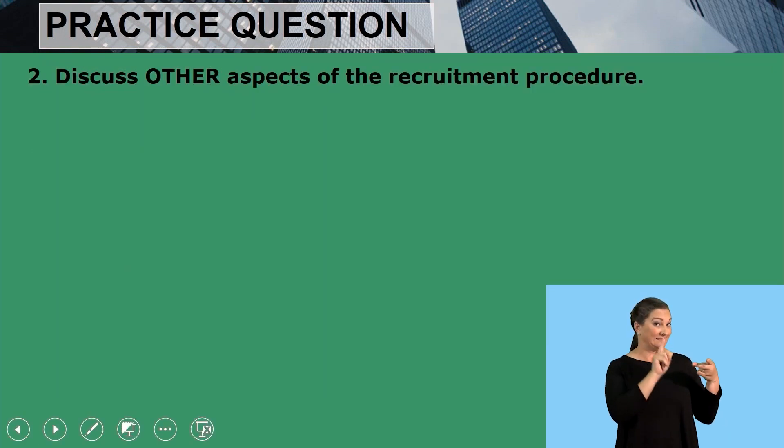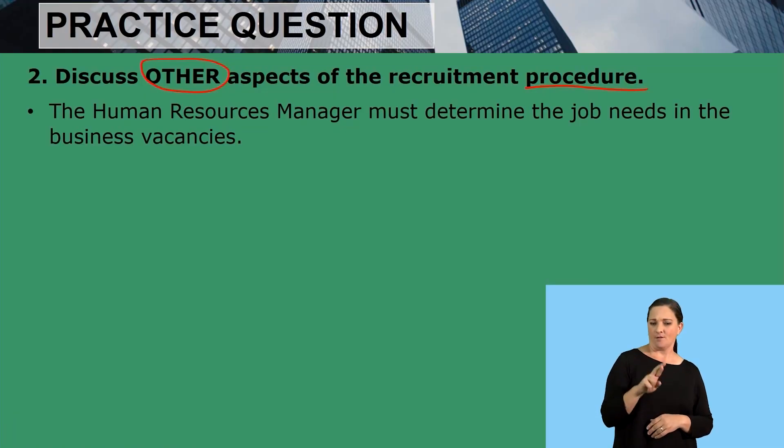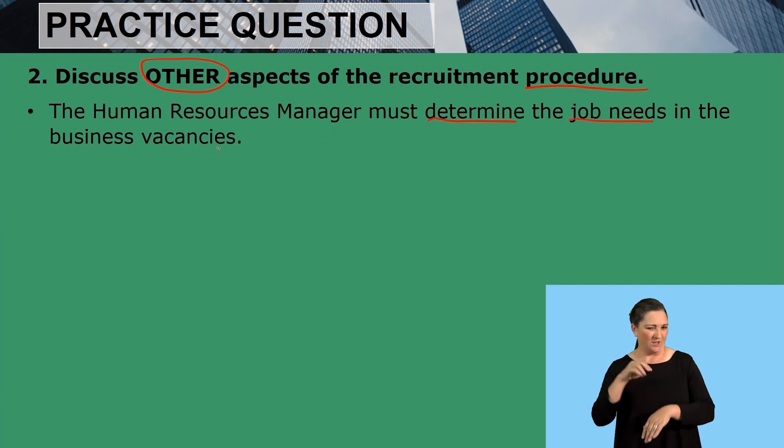Let's look at our second practice question, which says discuss other aspects of the recruitment procedure. Remember, grade 11, if the question is asking you to describe or explain other factors, it means you are not going to repeat what you have already identified in the scenario — you need to come up with different responses. The human resource manager must determine the job needs and vacancies in the business, analyzing exactly what is required in the job, what duties the job requires, and who is the most suitable candidate for that position.